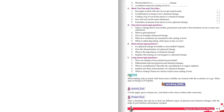Fourth part: photosynthesis is a chemical change. Fifth part: a method to prevent rusting of iron is galvanization.